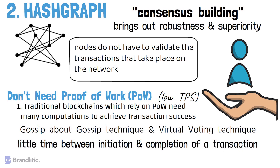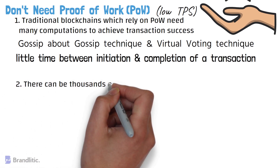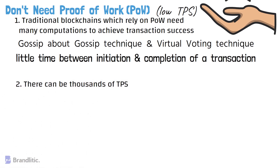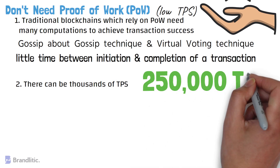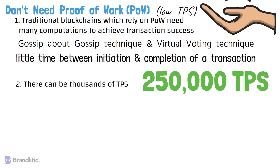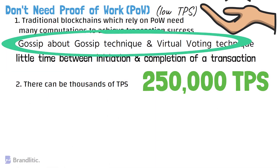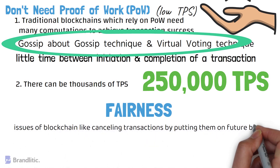These techniques do not require proof of work to validate transactions, resulting in little time between initiation and completion. The lack of proof of work means thousands of transactions per second are possible, and the team behind hashgraph claims the network can achieve more than 250,000 TPS. Additionally, consensus timestamping in hashgraph avoids blockchain issues like cancelling transactions by pushing them to future blocks, ensuring greater fairness.